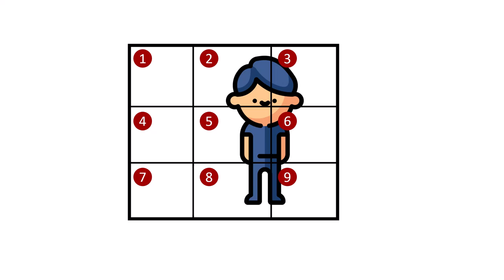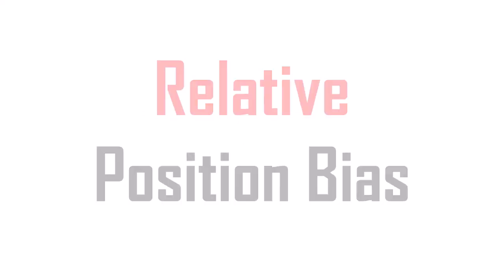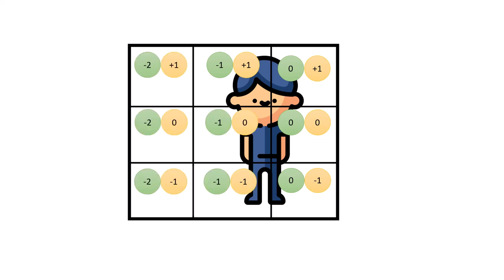So how can we solve this? We can rely on relative position bias, which is the title of this video. In relative position bias, when we have an image, we can focus on one single token — for example, a patch — and consider it as our origin at (x0, y0). If I go one step to the top, the position would be (0, 1); one step to the bottom would be (0, -1); one step to the left and one step to the top would be (-1, 1). And for the rest of the patches, I can treat them exactly the same, giving us these relative positions.